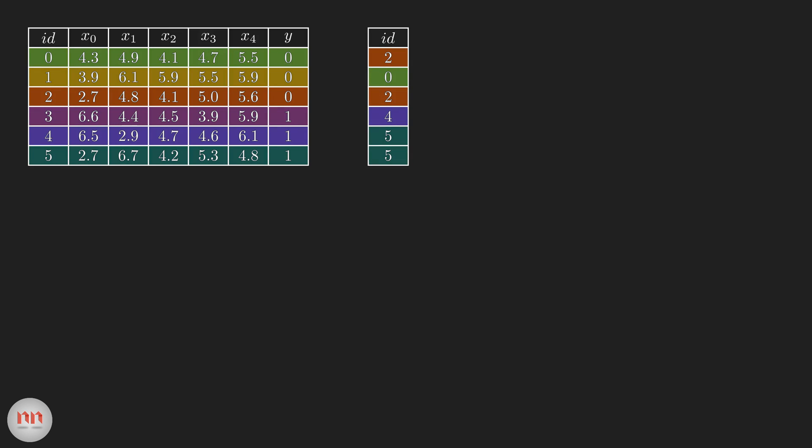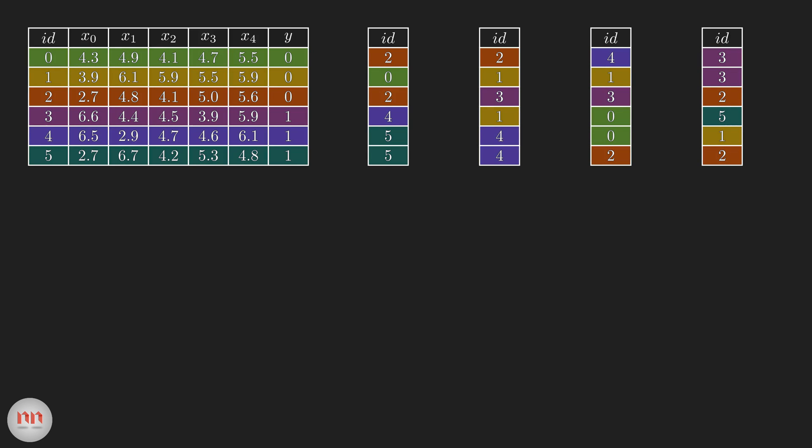Here's the first data set. Due to lack of space, I am writing only the row IDs. Notice that row 2 and 5 came more than once. That's because we are performing random sampling with replacement. That means, after selecting a row, we are putting it back into the data. And, here are the rest of the data sets. The process we just followed to create new data is called bootstrapping.